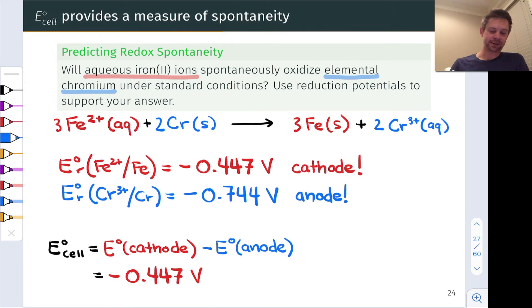And now, watch carefully, minus the reduction potential of the anode. So I'm going to paste it in, -0.744 volts. And notice that negative is going to become a positive value. This difference comes out to an overall cell potential of +0.297 volts.